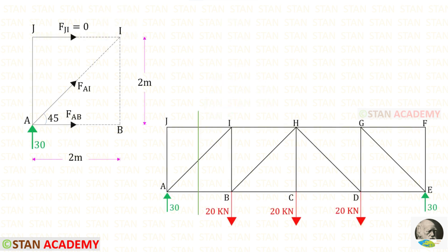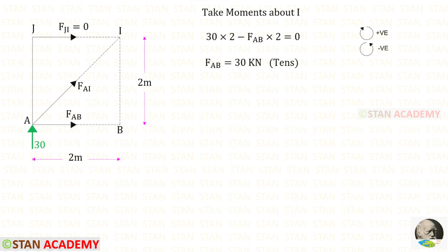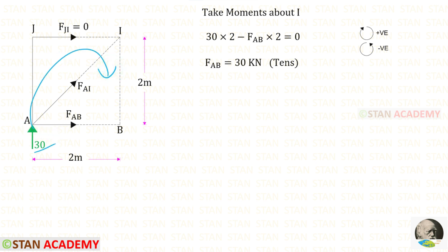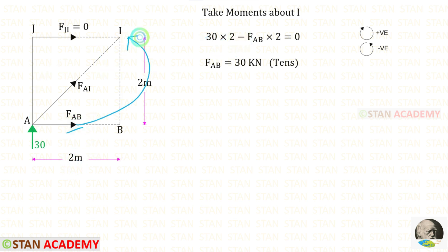Now I am going to make the second section and take the left side portion for analysis. We already know FJI equals zero, so no need to consider it when taking moments. Taking moment about I, we should not consider FAI. The remaining forces are 30 and FAB. 30 is acting clockwise so it is positive with a distance of 2. FAB is acting anticlockwise so it is negative with a distance of 2. For FAB we get a positive value, meaning it is tensile.